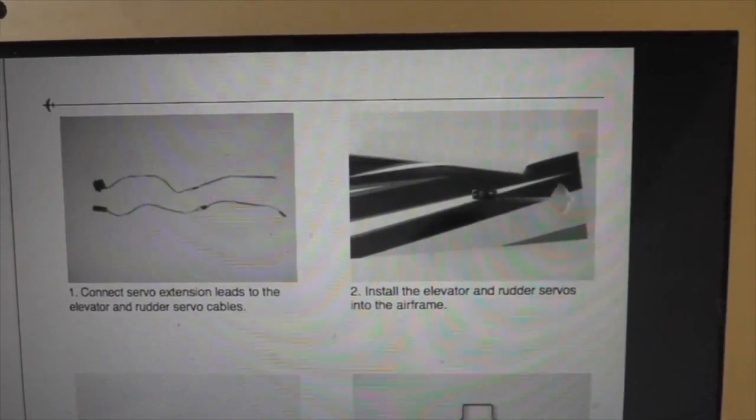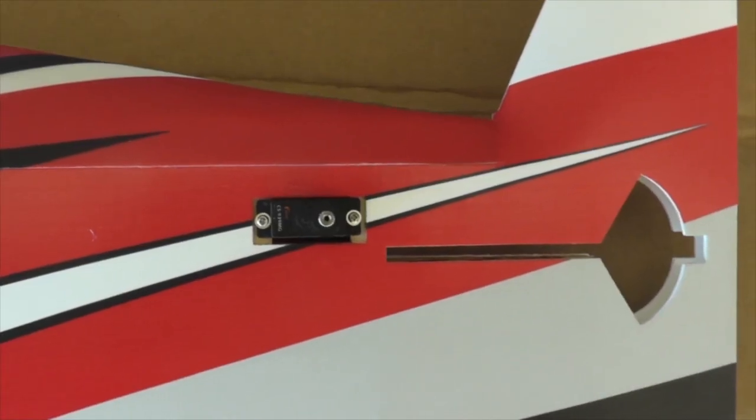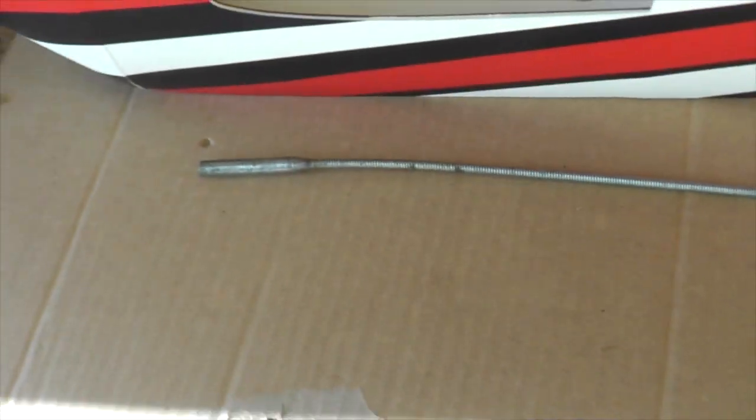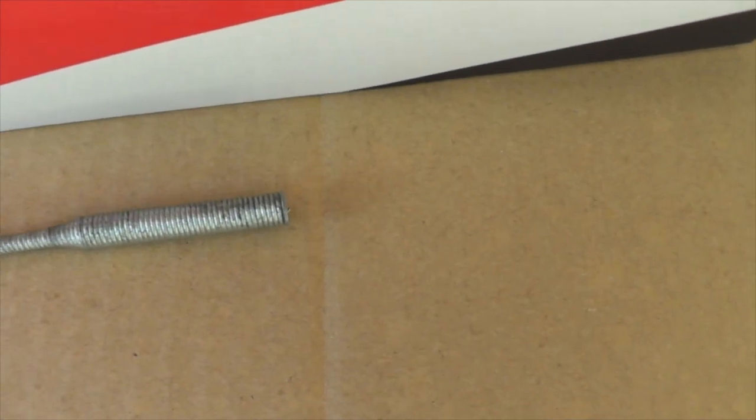We start with the elevator and rudder servos. The elevator servo's in, and the rudder servo, and the wires are pulled through them. I pull the servo wires through using this tool right down here, this is just a little reaching tool. You depress it like that, and then you can grab the servo wires and pull it through real easy.